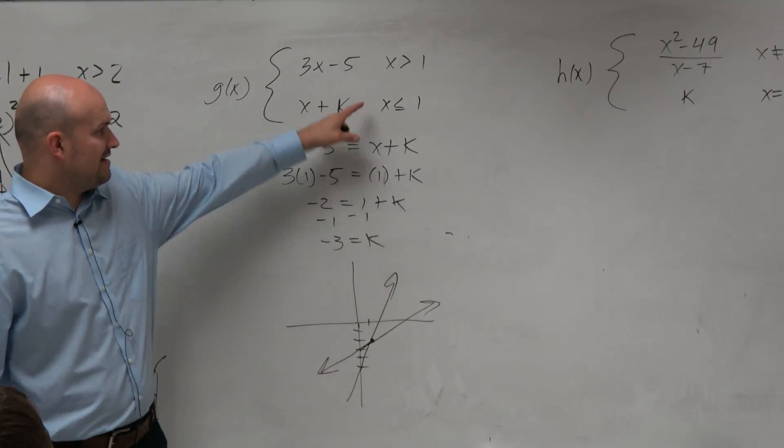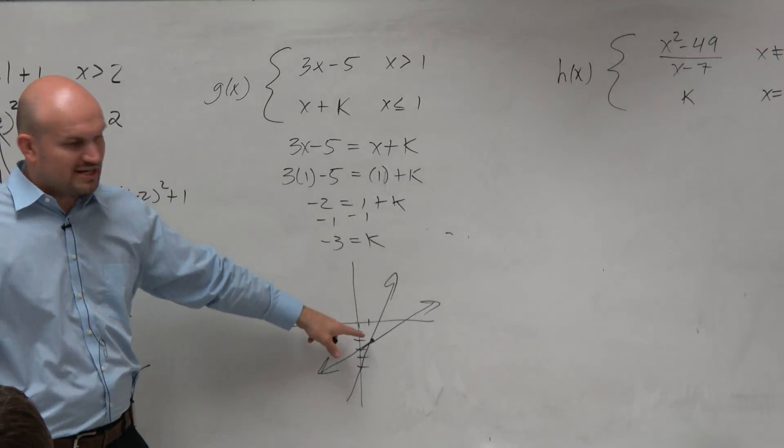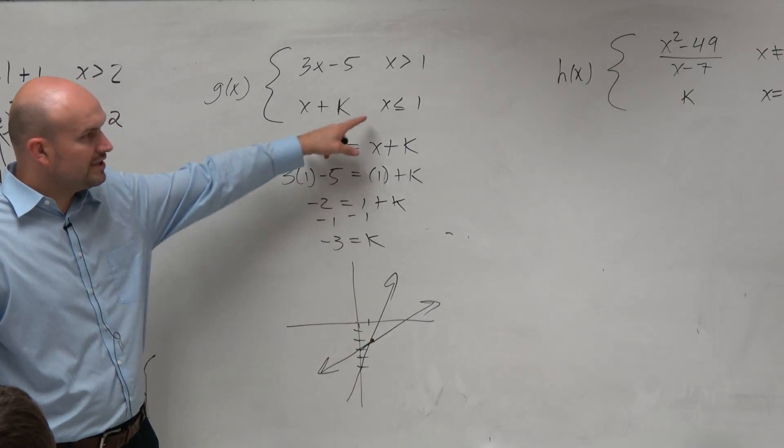So you guys see how that? Now, obviously, you'd add the constraints and then restrict them. But do you guys see how they cross at negative 3 at 1, comma negative 3?